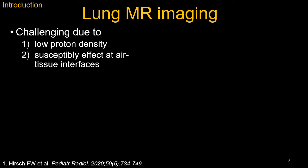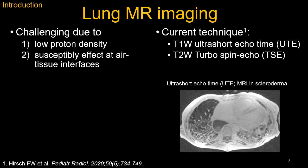Lung parenchyma MRI is extremely challenging due to low proton density and the susceptibility effect adjacent to numerous air-tissue interfaces, such as alveoli and the bronchial tree. At conventional field strengths like 1.5T and 3T, this has required the use of ultra-short echo time imaging, which produces great image quality but has notoriously low scan efficiency.